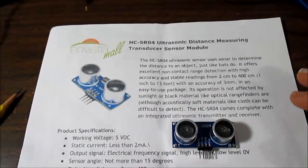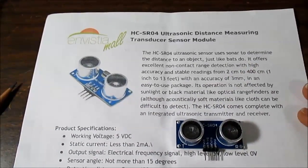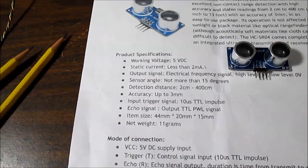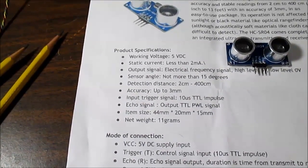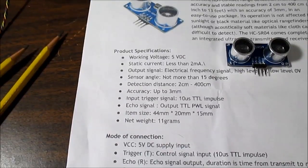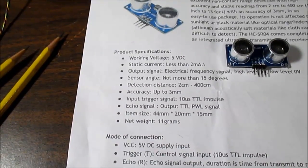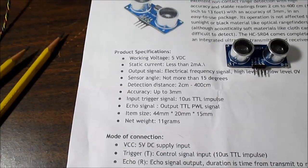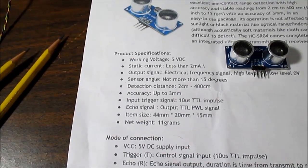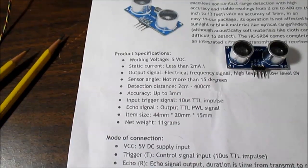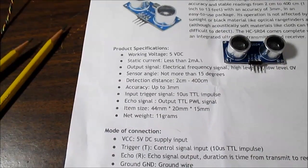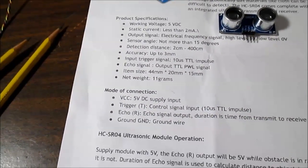I won't read through all of this. You can just pause if you want to take a look at the information. But, working voltage is 5 volts DC, 2 milliamps current, 15 degrees sensor angle, 2 to 400 centimeters with 3 millimeters accuracy. So this should be interesting.